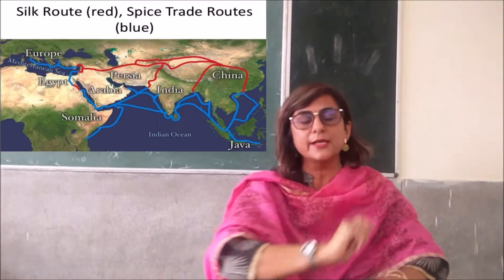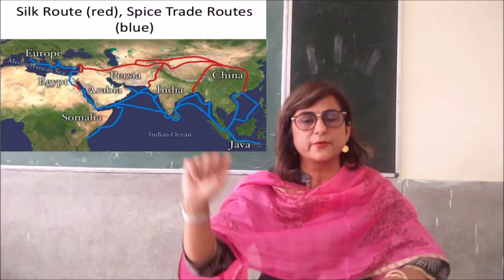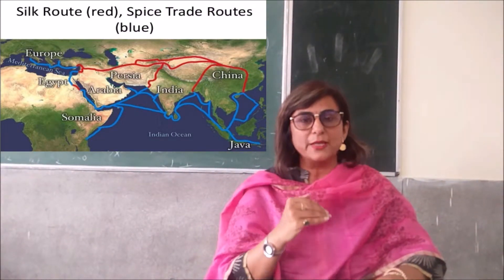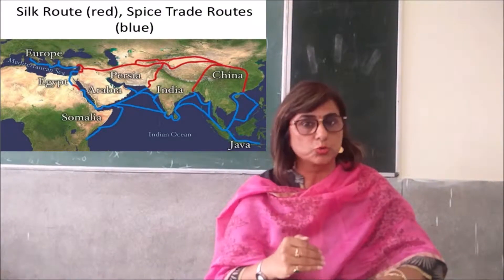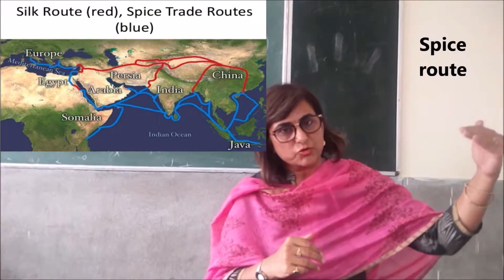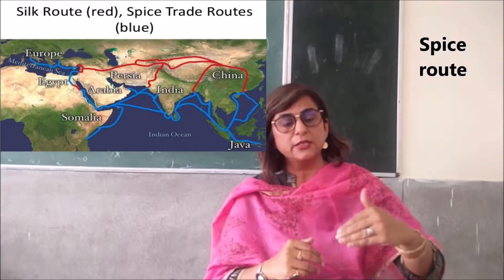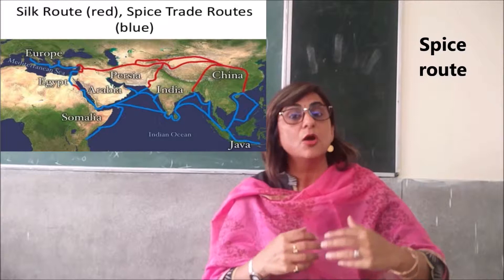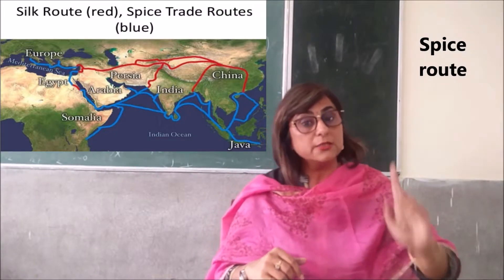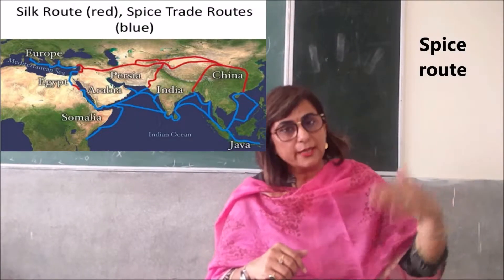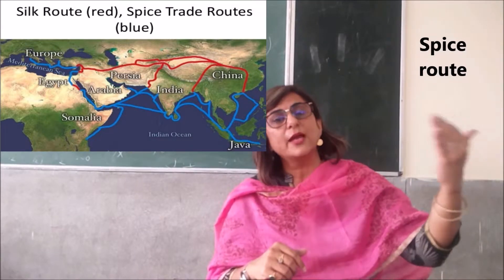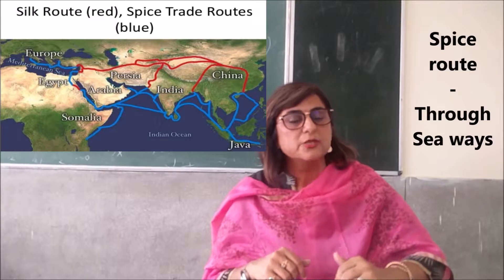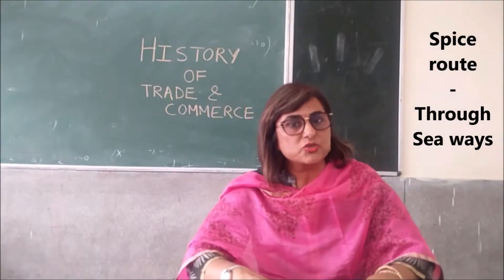Starting from China, ending at Europe and vice versa. Then you have the coastal line, which was basically called the spice route. We had trade along the coast and here it was not silk but spices being traded from India. In the ancient period through the Roman Empire, and later when the Europeans came to India in search of spices — this whole coastal trade is called spice trade.